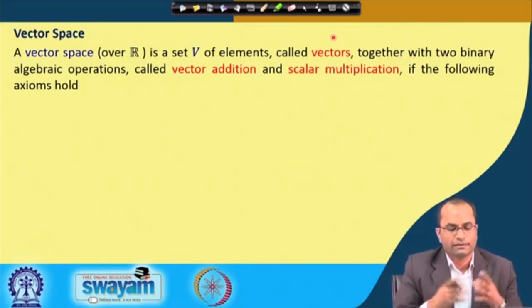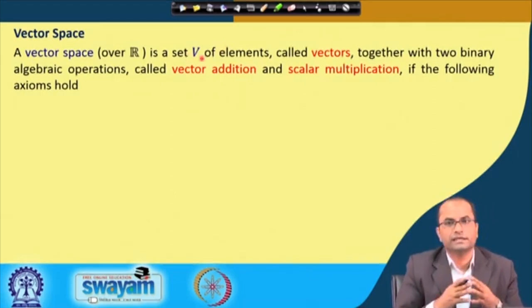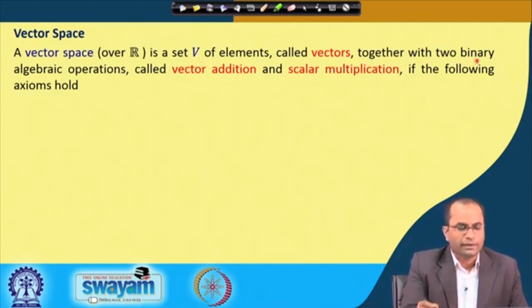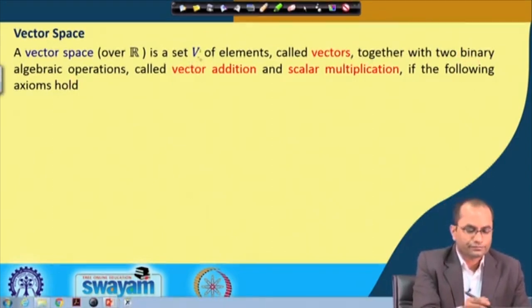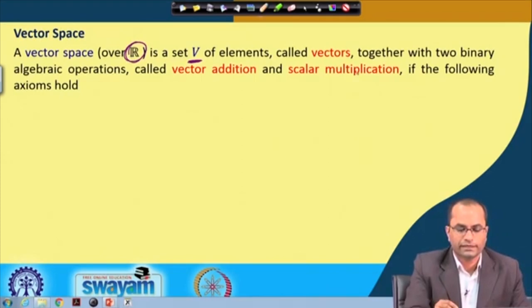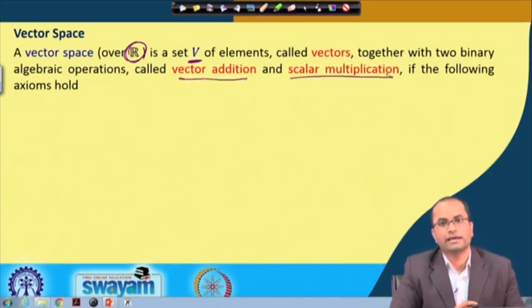The elements of this vector space V will be called vectors. They can be matrices, they can be functions, depending on what type of elements V contains. Together with two binary operations: this is a slightly more general definition. We need, other than the set V, the set R, and then two binary operations which we call vector addition and scalar multiplication.